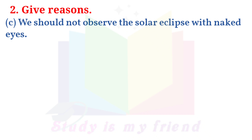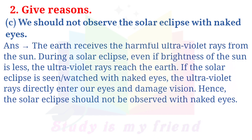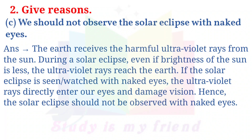C. We should not observe the solar eclipse with naked eyes. Answer: The earth receives harmful ultraviolet rays from the sun. During a solar eclipse, even if the brightness of the sun is less, the ultraviolet rays still reach the earth. If the solar eclipse is watched with naked eyes, the ultraviolet rays directly enter our eyes and damage vision. Hence, the solar eclipse should not be observed with naked eyes.